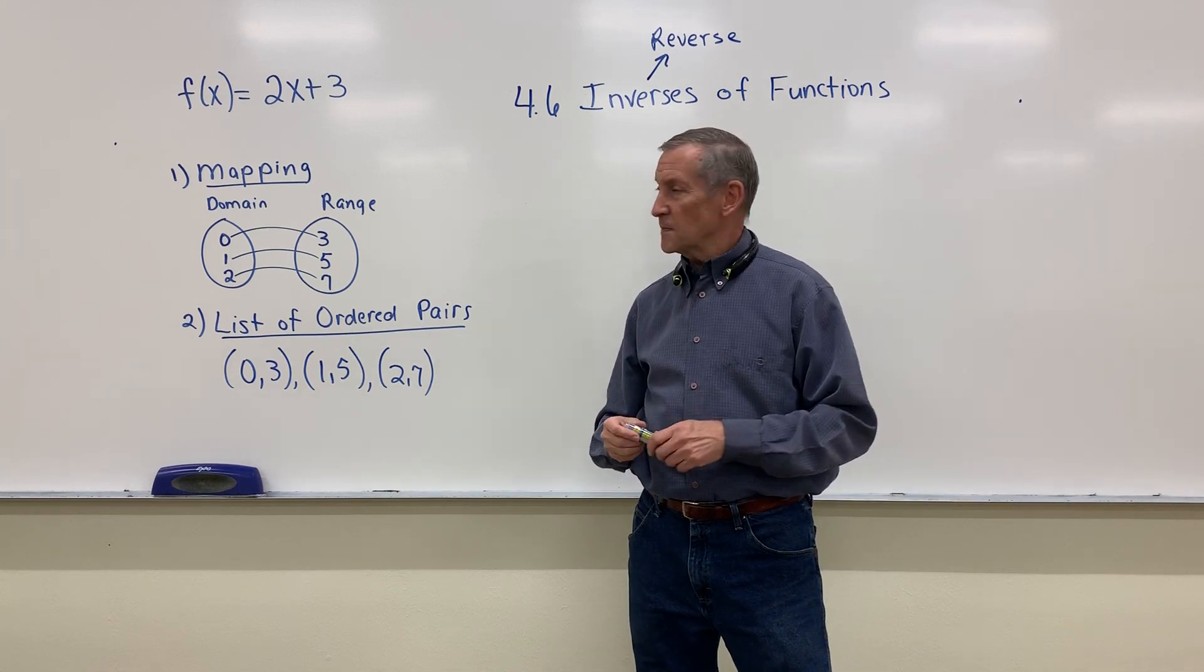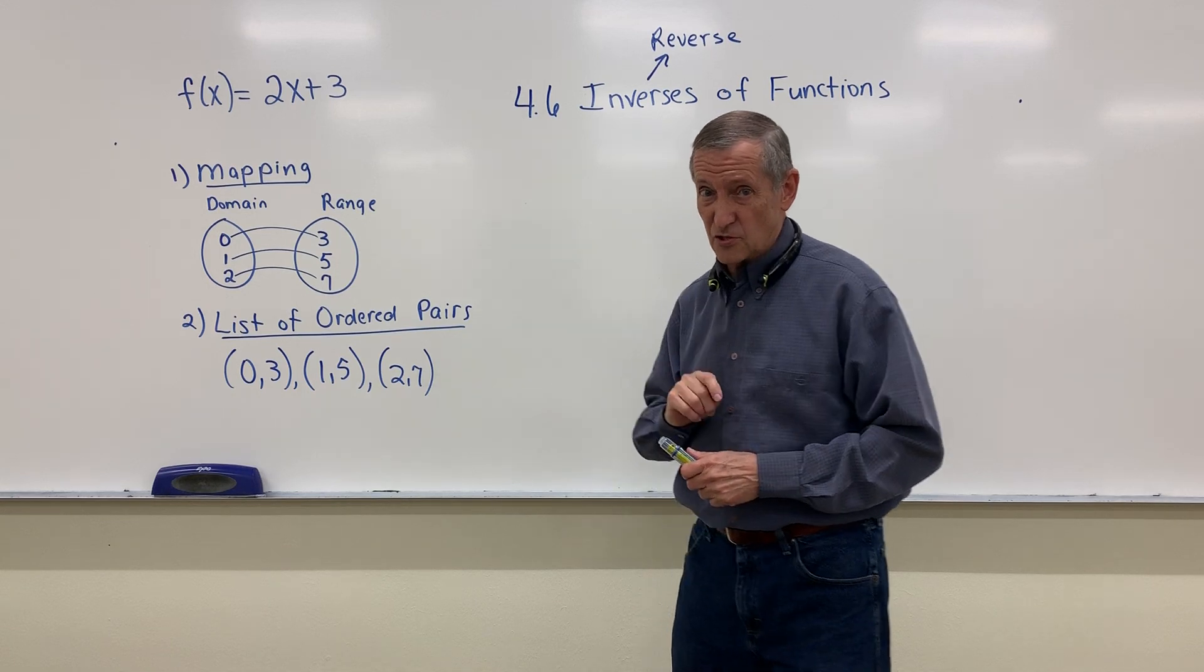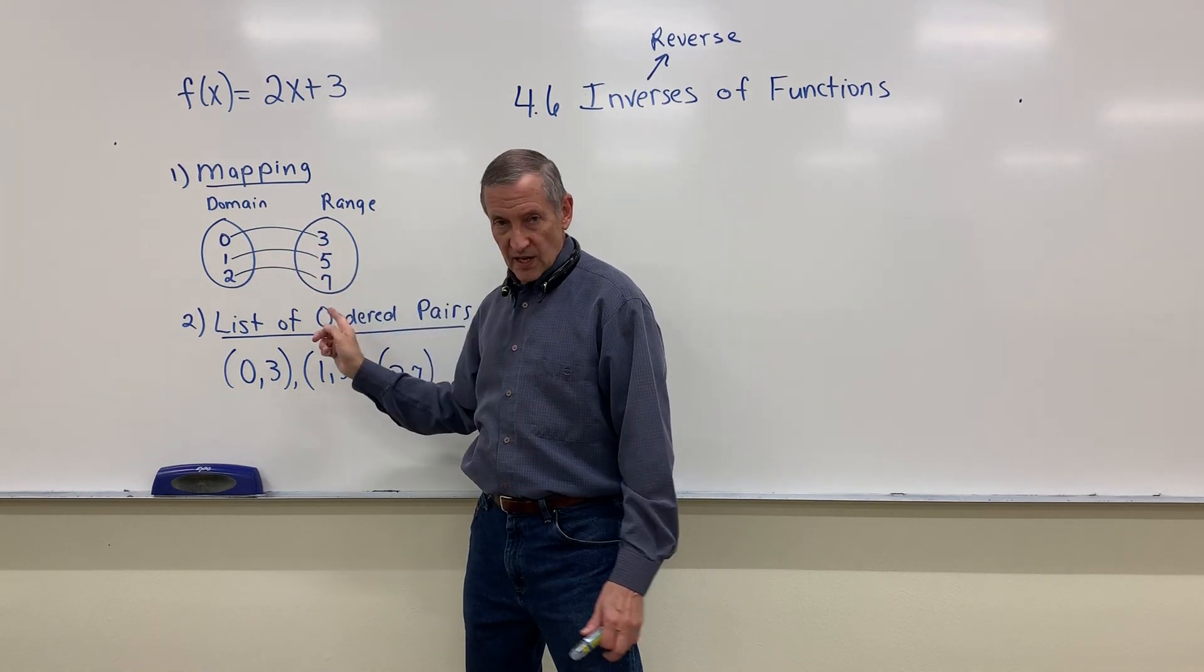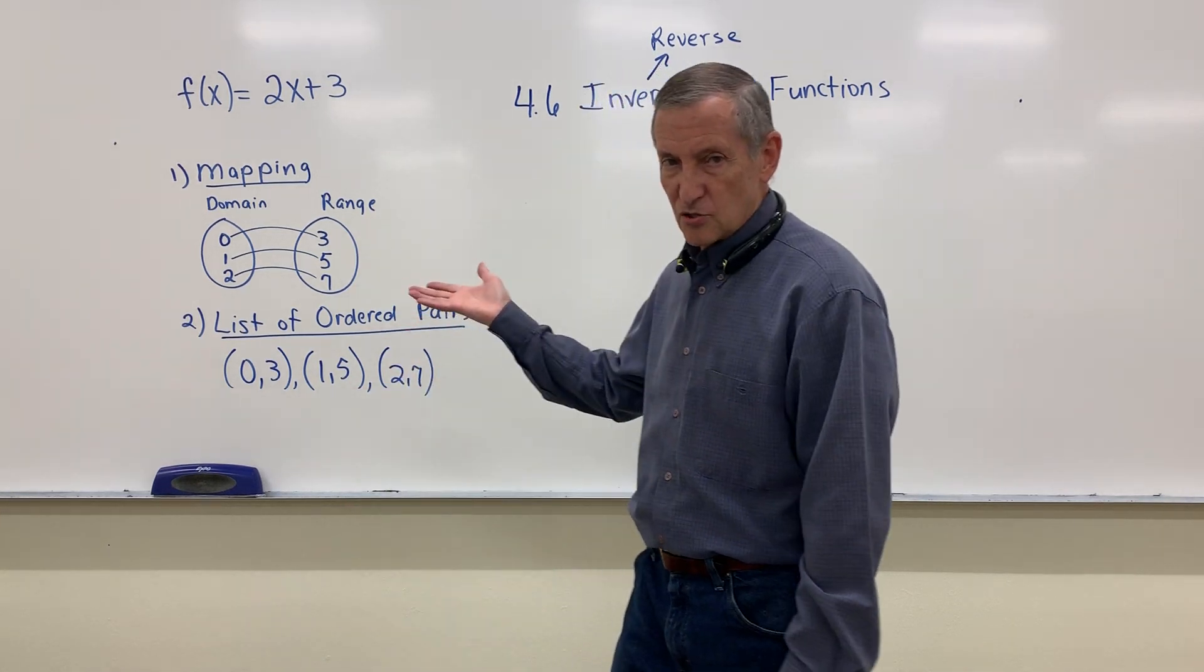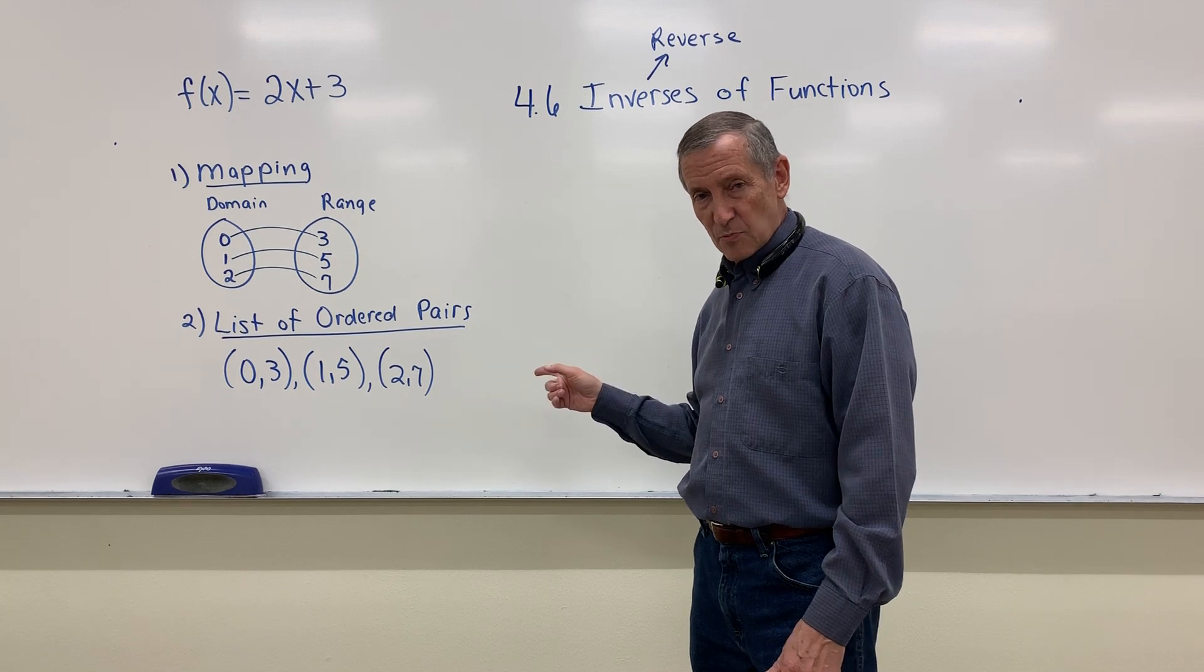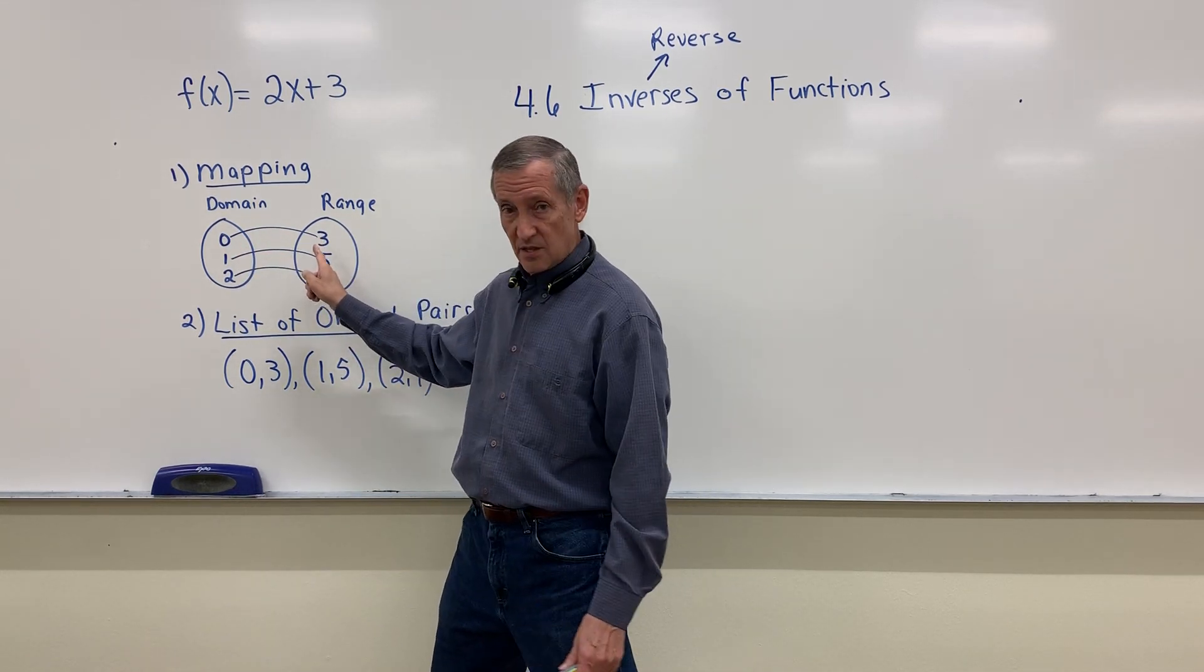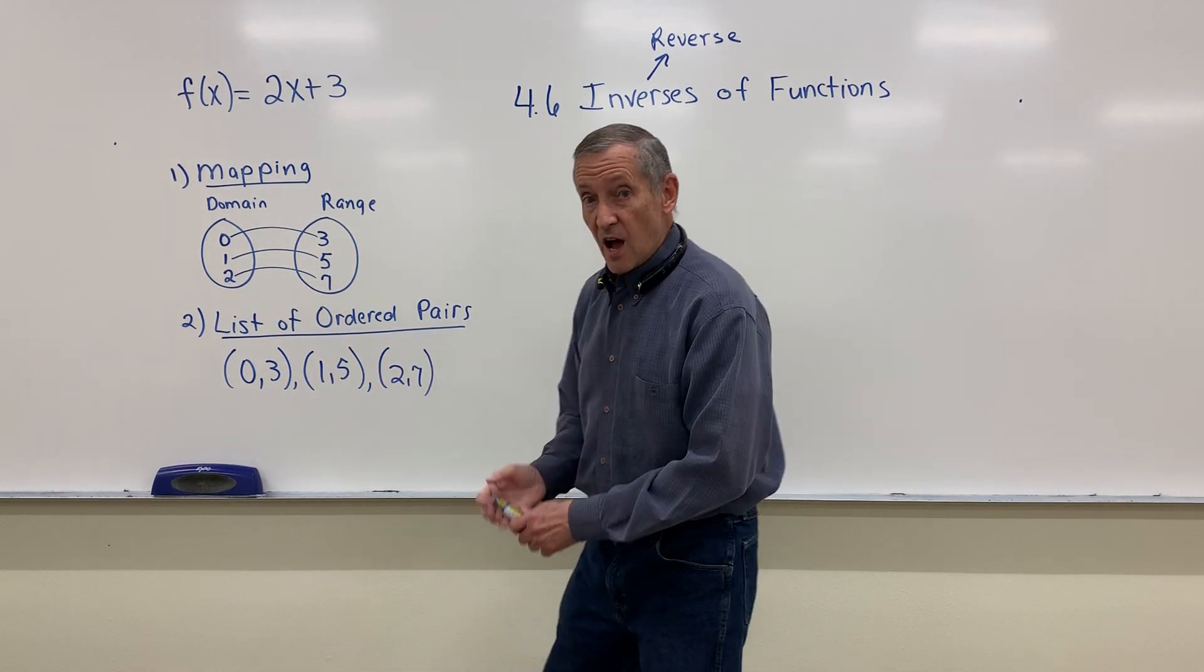You may recall that we talked about functions in a couple of different ways, actually four different ways. Here's the first two. The first one was just a mapping. Remember this? Elements in the domain mapped onto elements in the range. First concept of a function, a simple picture, a mapping. Second representation of a function was just a list of ordered pairs. Notice, 0 is related to 3. Thus, the ordered pair 0, 3. 1, 5, 2, 7.